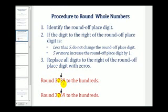So for 3739, if we round this to the hundreds, this three tells us to round down, which means we do not change the seven, and then replace the digits to the right with zero, so this would round to 3700.